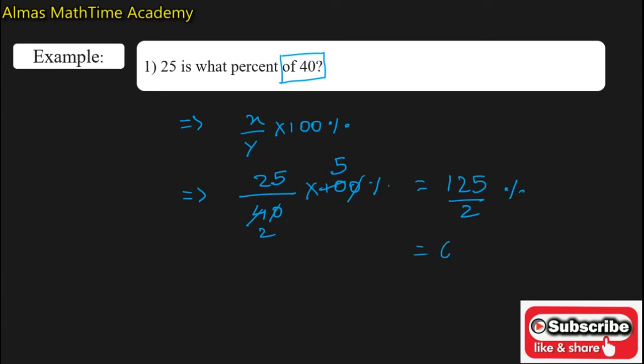This can also be written as 62 1/2% or in the decimal form it will become 62.5%.